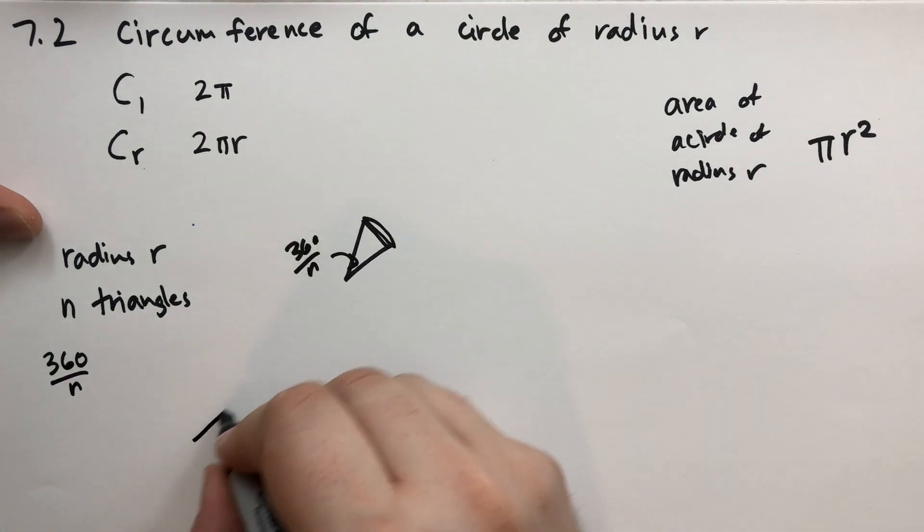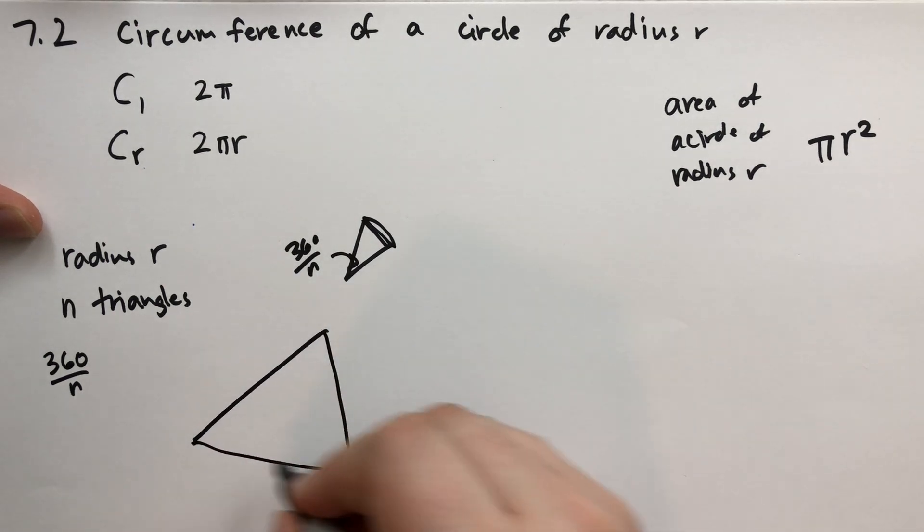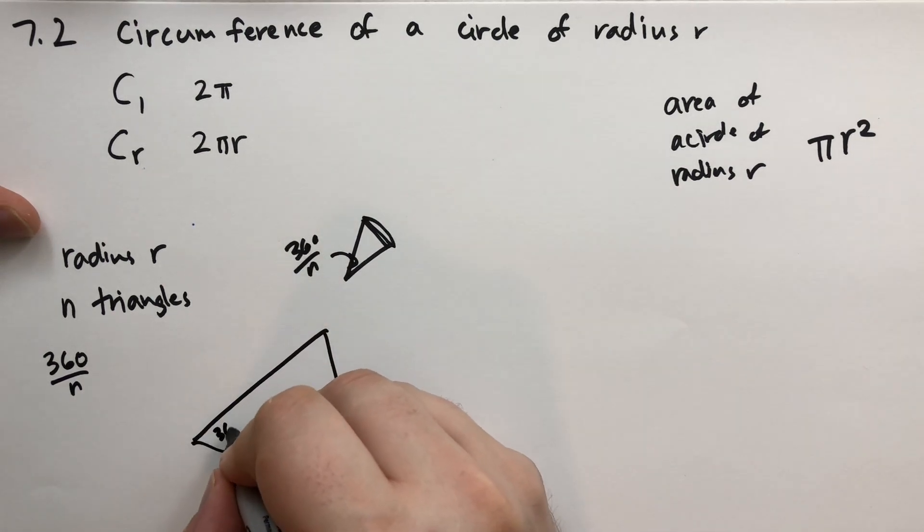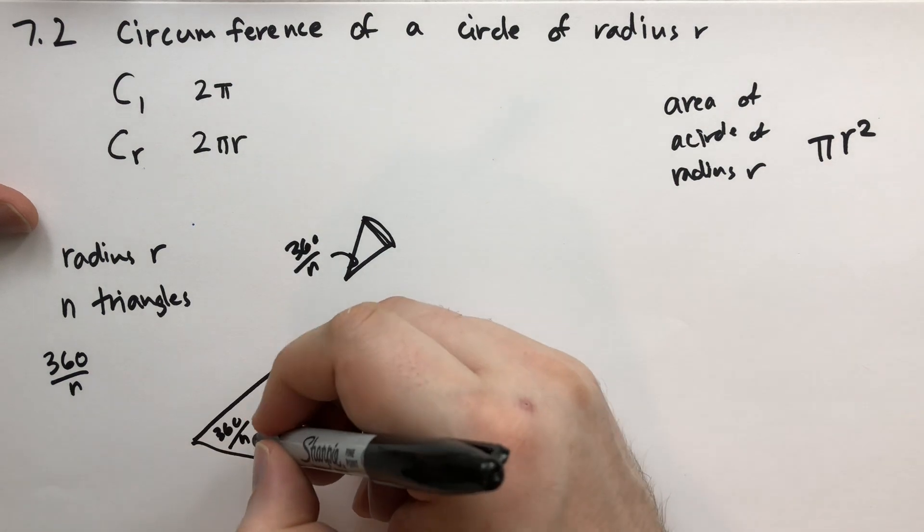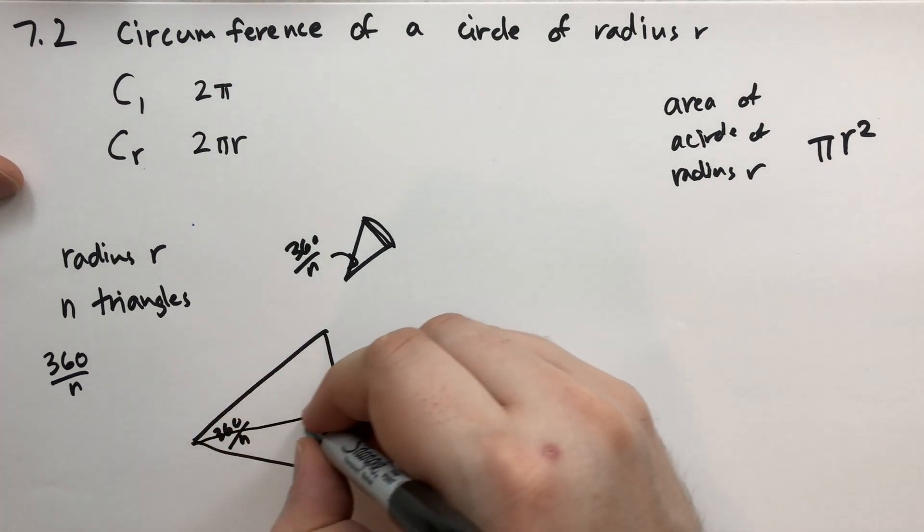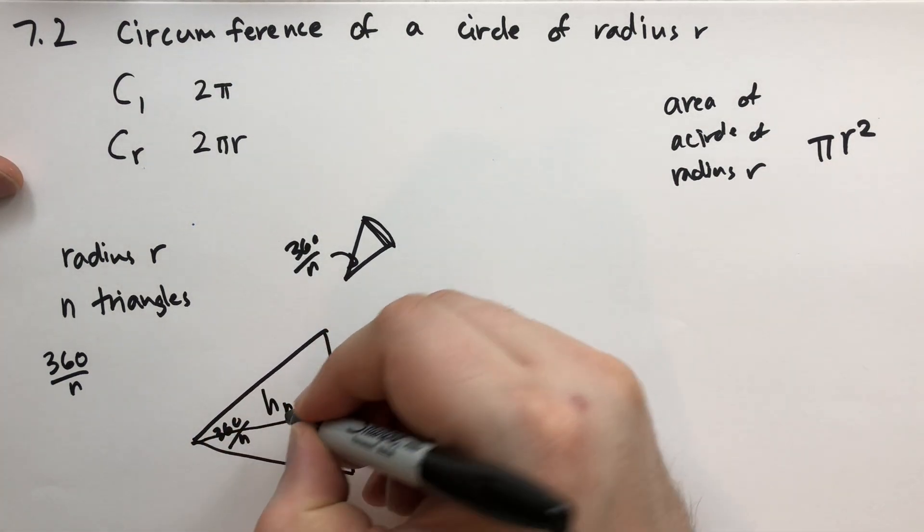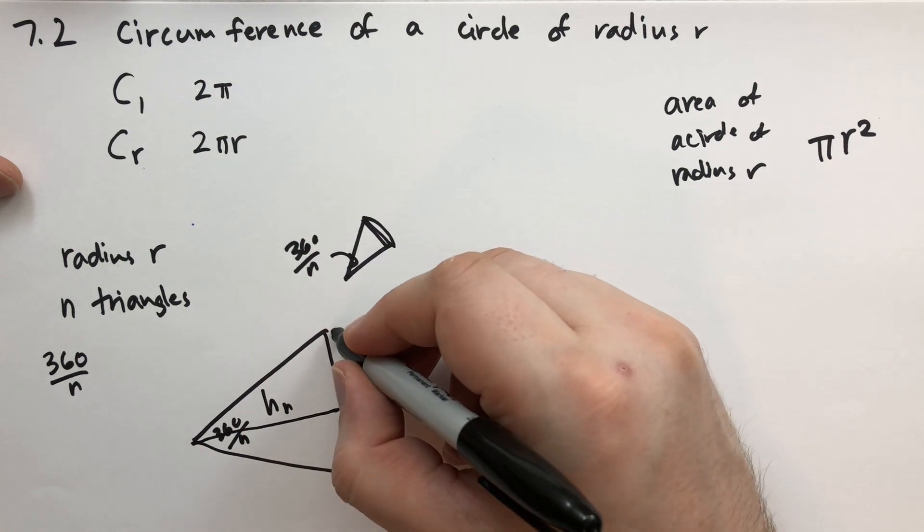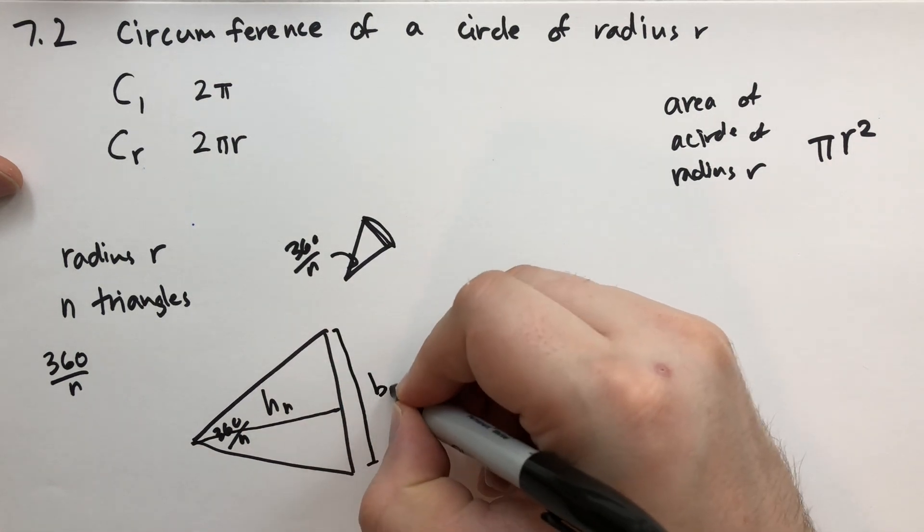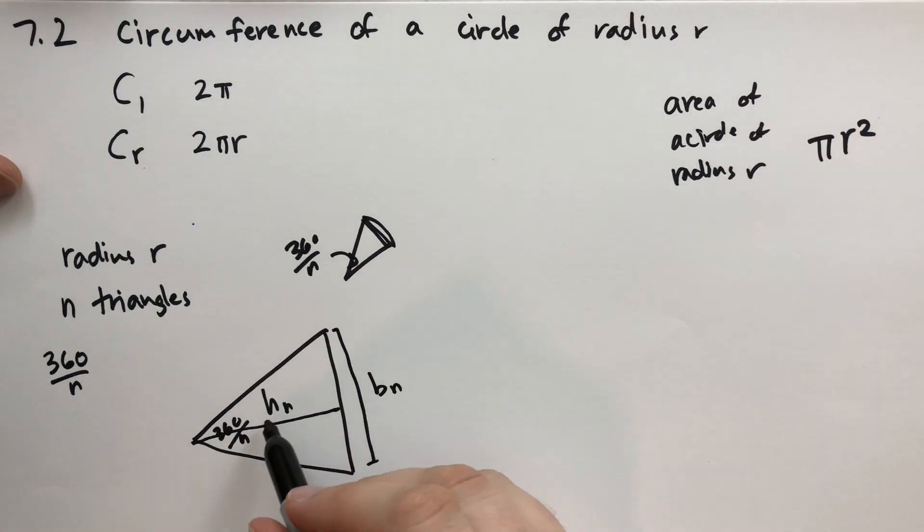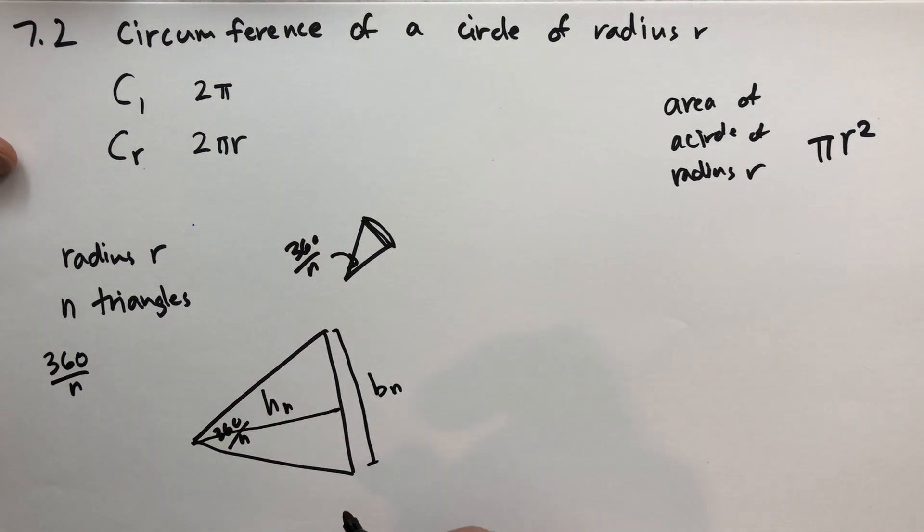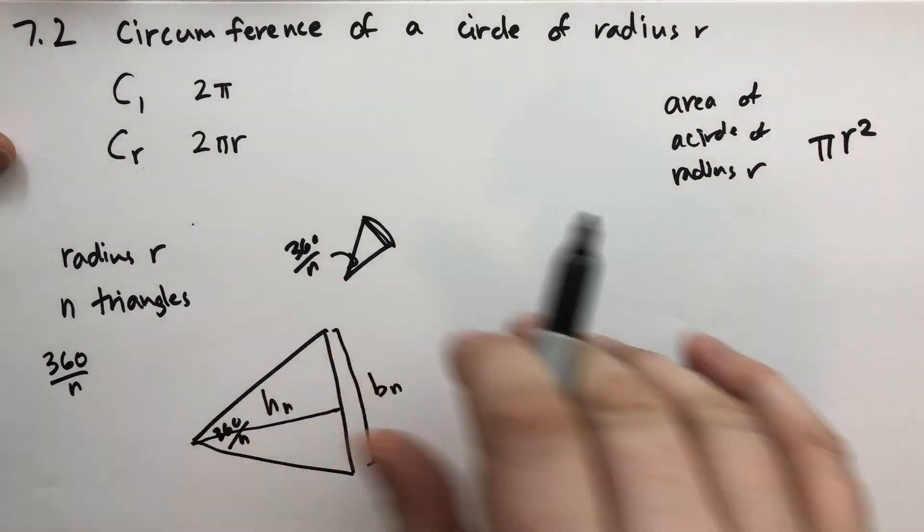Then we're going to have, let me draw this triangle bigger. This is the center of the circle. This is 360 over n degrees. We have a line that goes through. We're going to call that h_n, that's the height. And then this distance here, we're going to call that the base b_n. If we have n triangles, this is going to be different for each of those triangles. And we're going to join them all together into one giant pizza.